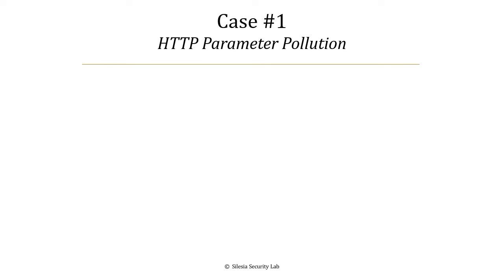Now it's time to discuss case number one: HTTP parameter pollution. This is a very powerful attack that can help you bypass authorization, and this is exactly what I'm going to show you in this case.